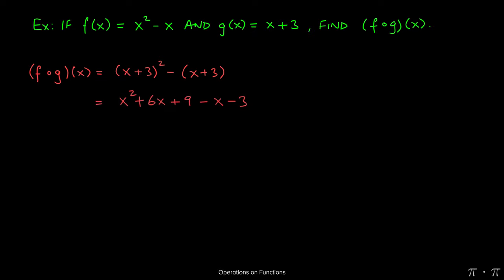Now, foiling this out or using a special product formula gives us x squared plus 6x plus 9. And then, as I said, when we distribute the negative, both the x and the 3 become negative.